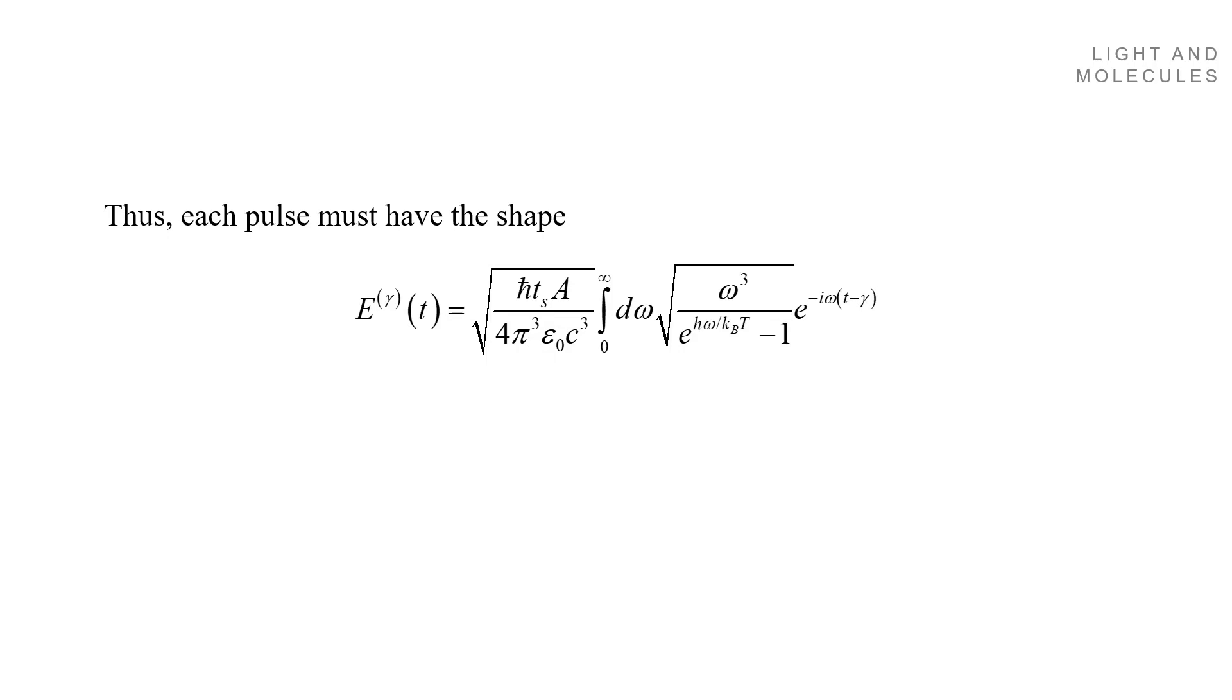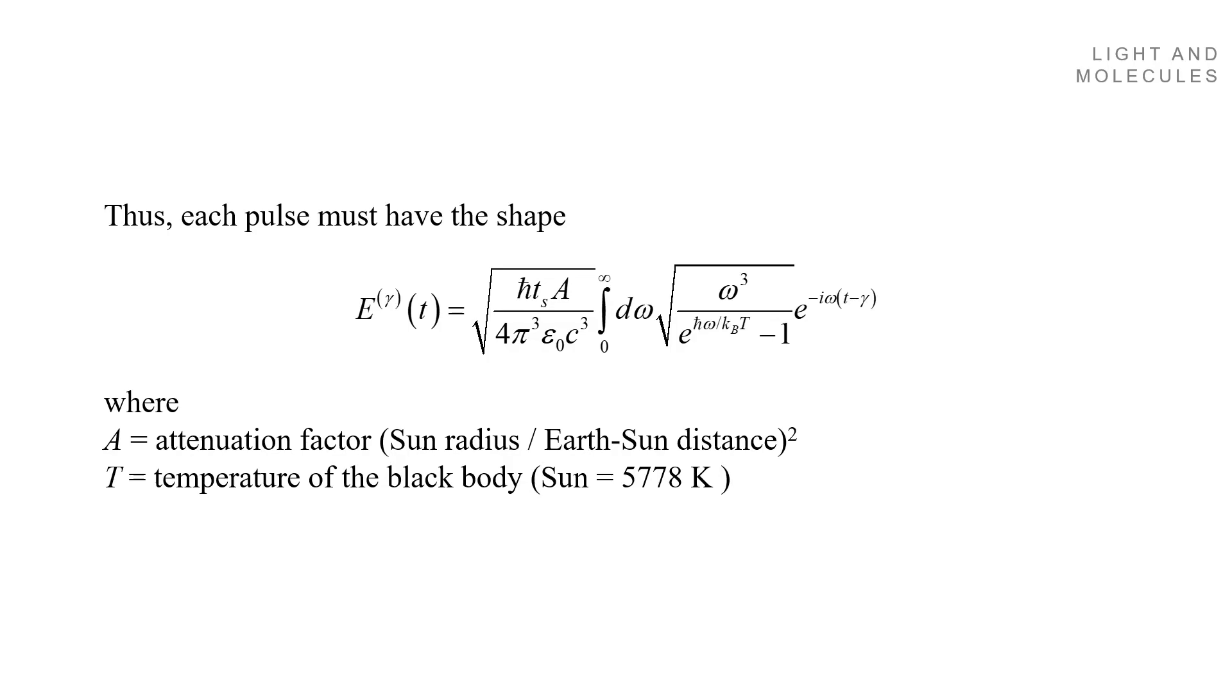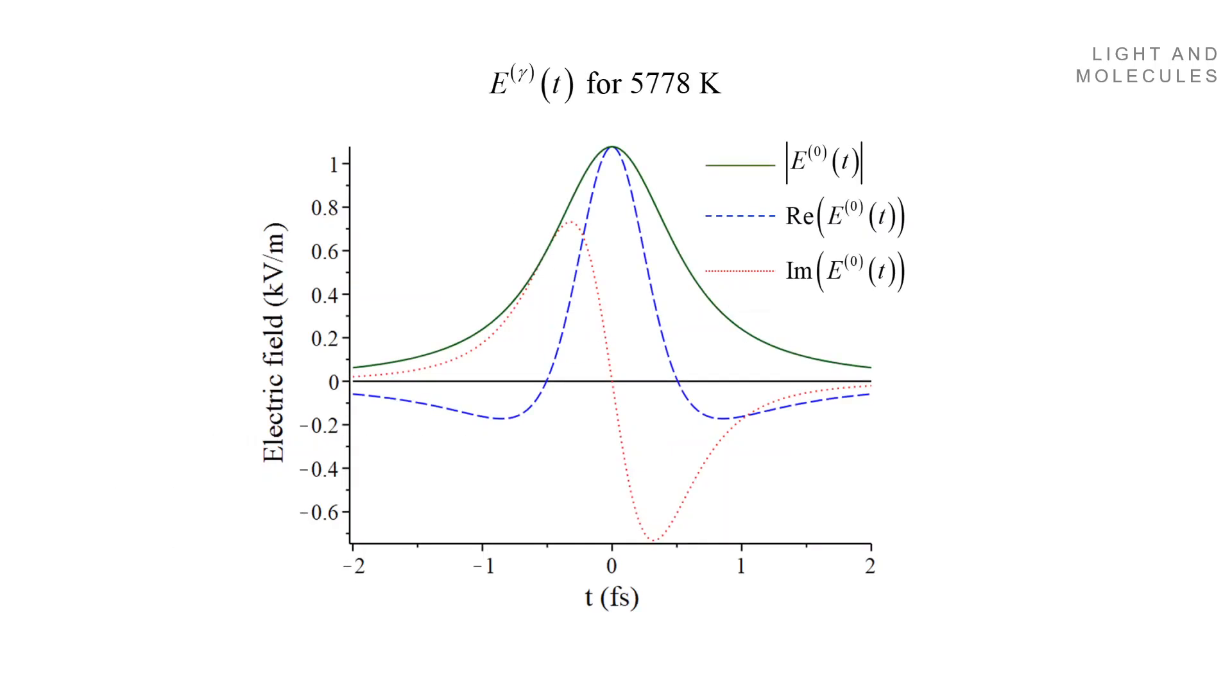And this pulse is the electric field of the pulse as a function of time. There's an attenuation factor A that has to do with the distance between Earth and the Sun. T is the temperature of the black body. In the case of the Sun, almost 6000 Kelvin. Gamma is the time of the pulse realization. And this is the shape of a pulse at 5778 Kelvin. You see here, the blue is the real part of the pulse. The red is the imaginary part of the pulse. And note that the pulse is very short. It's like a few femtoseconds only.